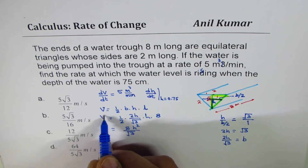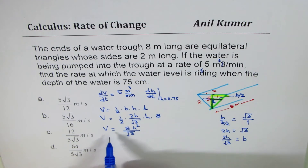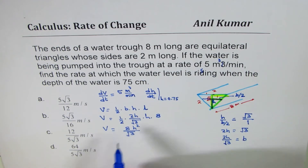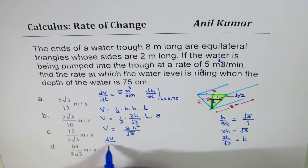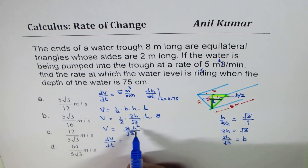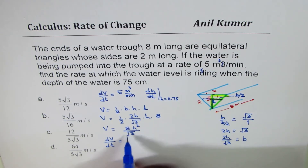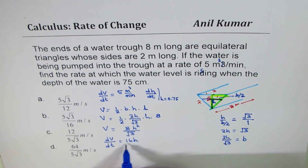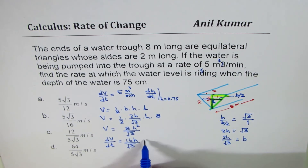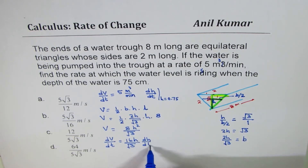That is the volume. Now, taking derivatives of both sides with respect to time, we get dV/dt equals 16h over √3 times dh/dt.